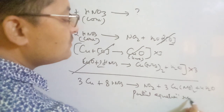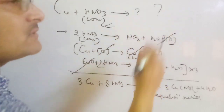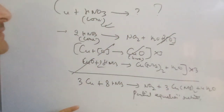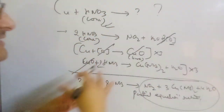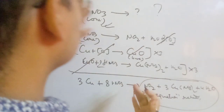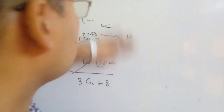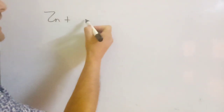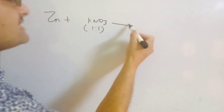So copper when reacts with concentrated HNO₃ — you don't need to worry about what the products are. Products are easily identified here and this reaction is balanced. If you have the concept of partial equations method, you can easily balance the chemical equation as well as easily predict the products. Now I'm going to talk about nitric acid reacting with a more reactive metal like zinc.